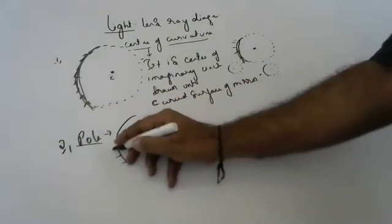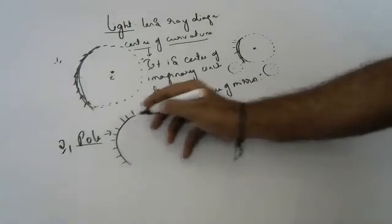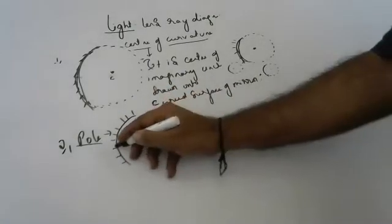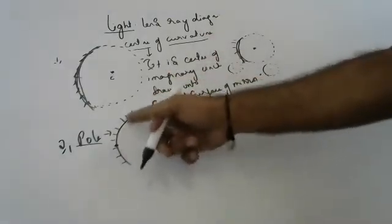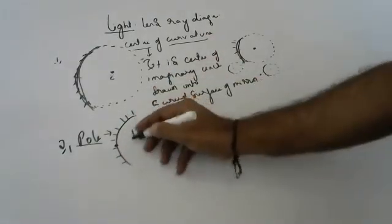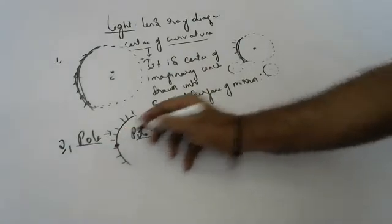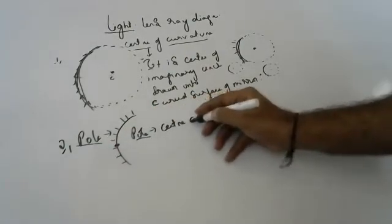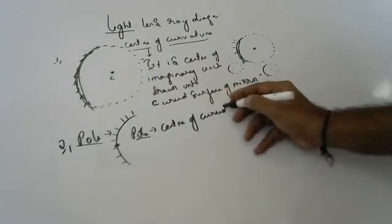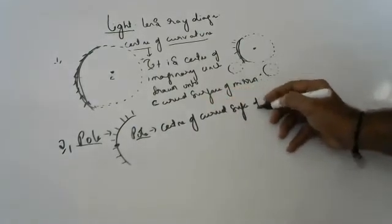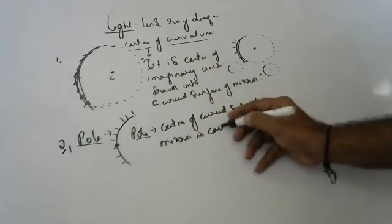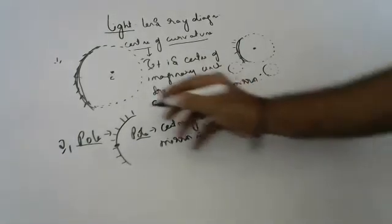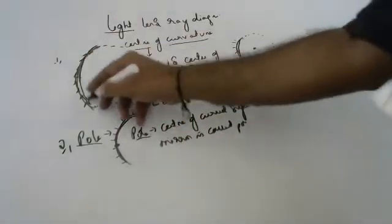The curved surface of the mirror has one center. The center of the curved surface of the mirror is called the pole. So: the center of the curved surface is called pole, and the center of the imaginary circle is called center of curvature.